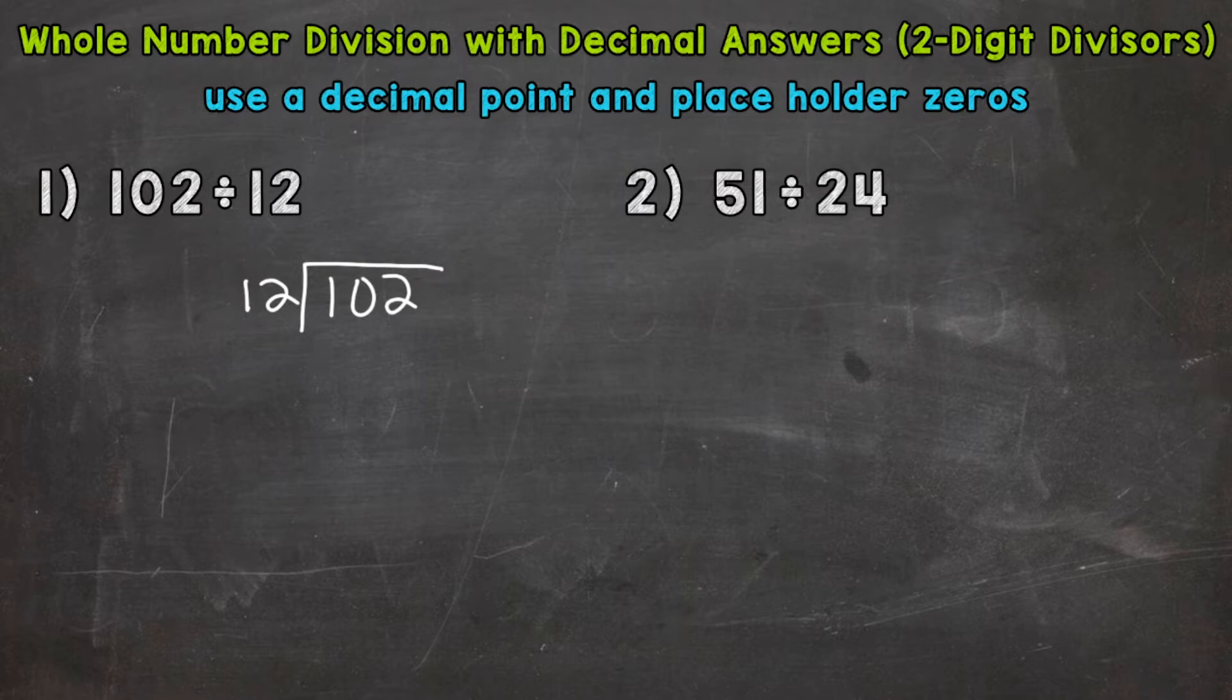How many whole groups of 12 out of 102? Well, 12 times 8 is 96. That is as close as we're going to get. So 8 whole groups of 12. We will put the 8 above the 102. 8 times 12 is 96. So we need to subtract. 102 minus 96 is 6.